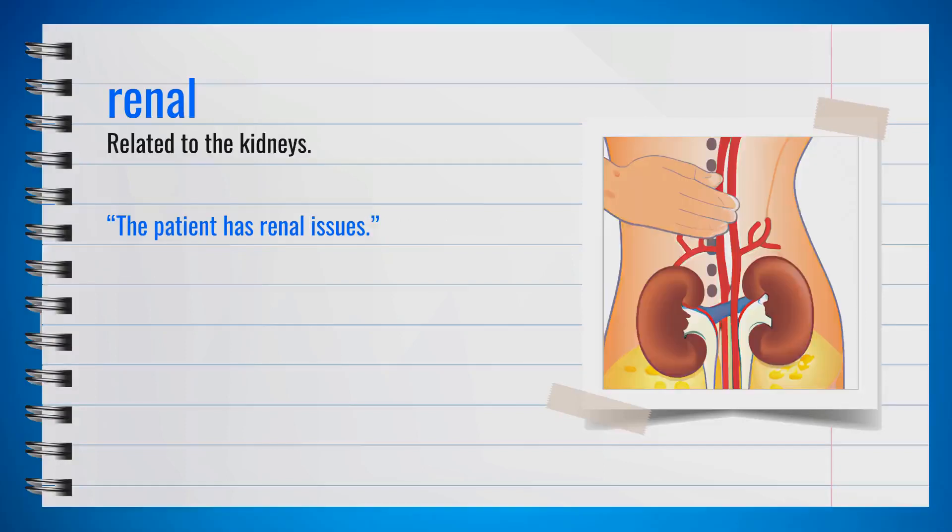The word renal, spelled R-E-N-A-L, is an adjective pronounced 'renal.' It means related to the kidneys. For example, the patient has renal issues. In summary, renal means anything related to the kidneys.